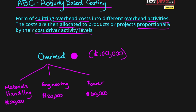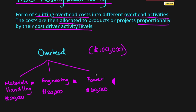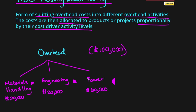Twenty thousand dollars of cost is materials handling, twenty thousand is engineering costs, and sixty thousand are power costs. So we've taken the total overhead and split sixty thousand to power, twenty thousand to engineering, and the remaining twenty thousand to materials handling. That gives us three separate overhead activity pools out of the one hundred thousand total.